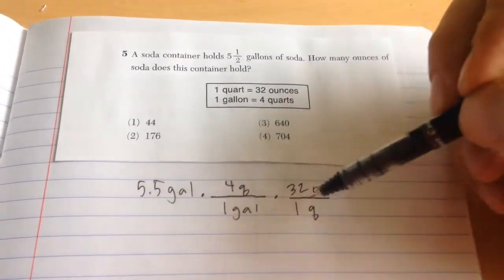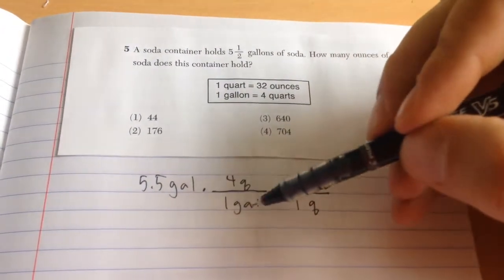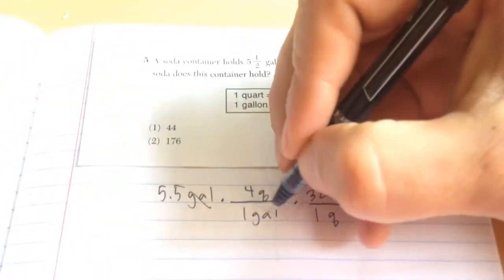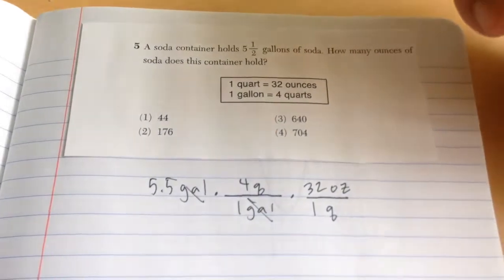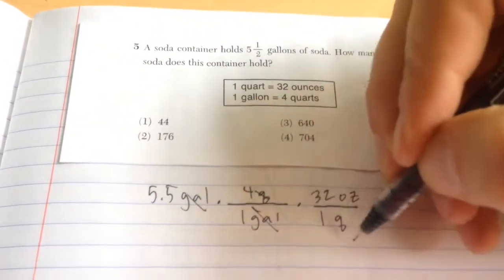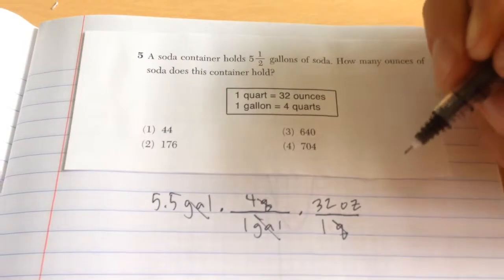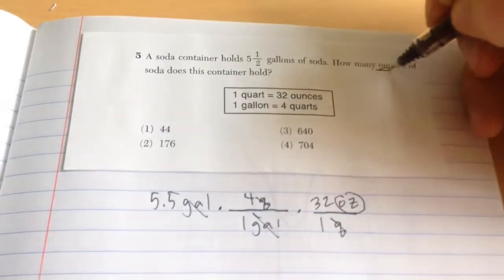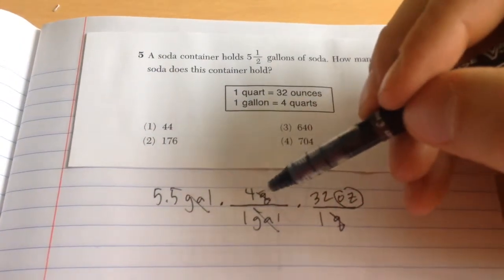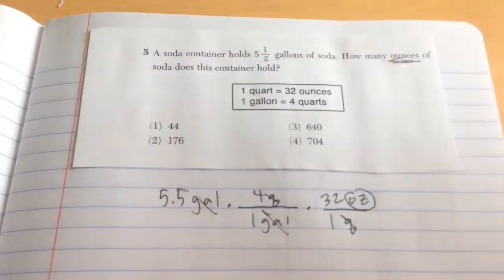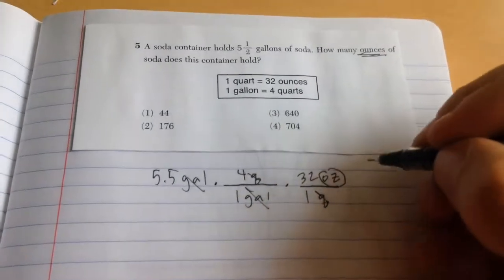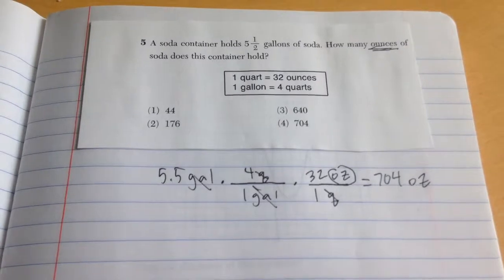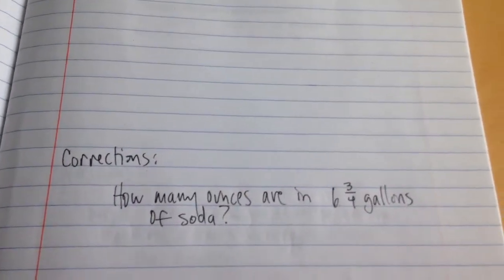Remember, we're going to multiply by these relationships. Gallon has to go on the bottom because we want these to be able to cancel out. Quart is going to cancel with quart. You're only left with ounces, and that's what you're trying to find. So I'll do 5.5 times 4 times 32. I get 704 ounces, choice number 4. For corrections.